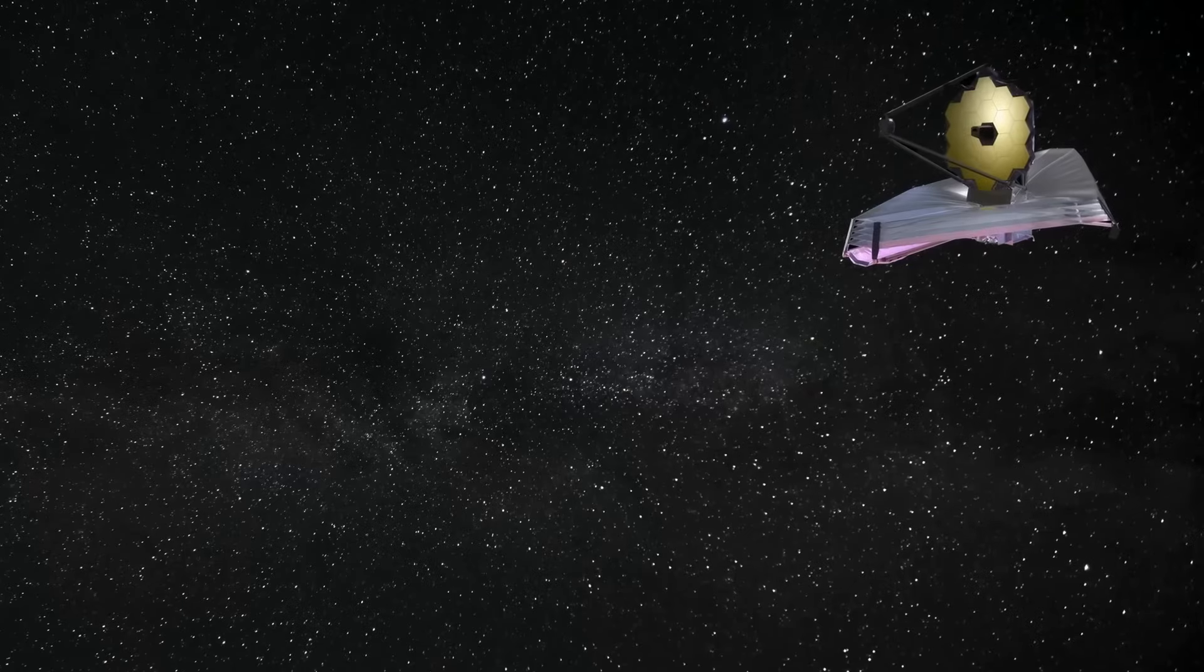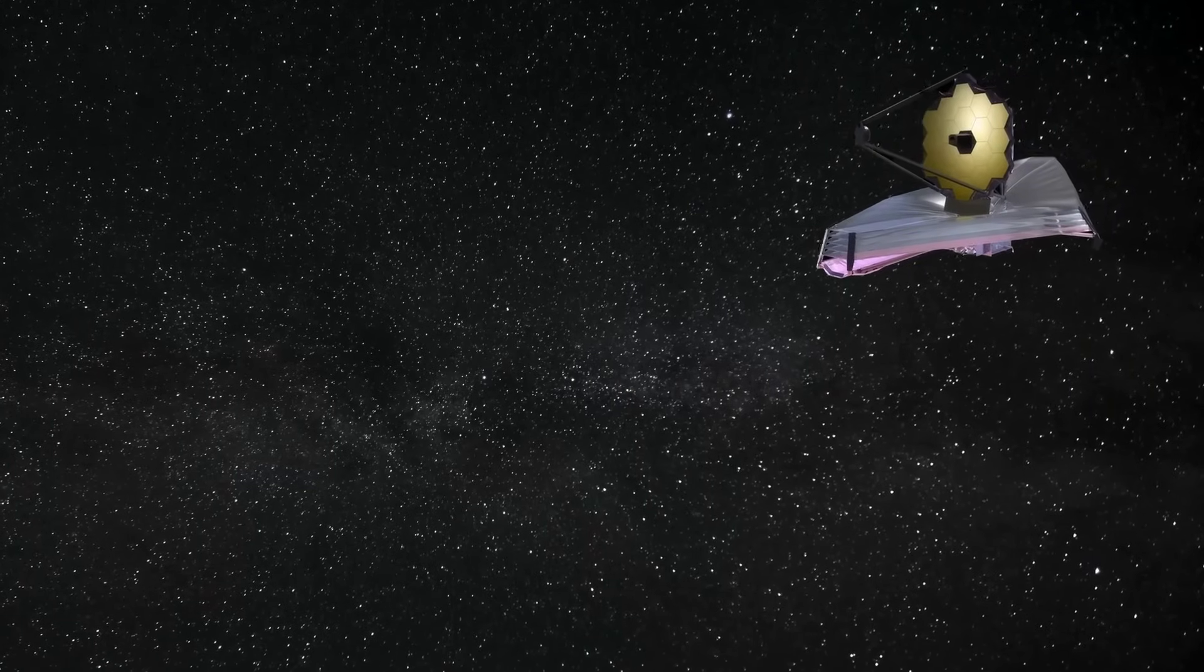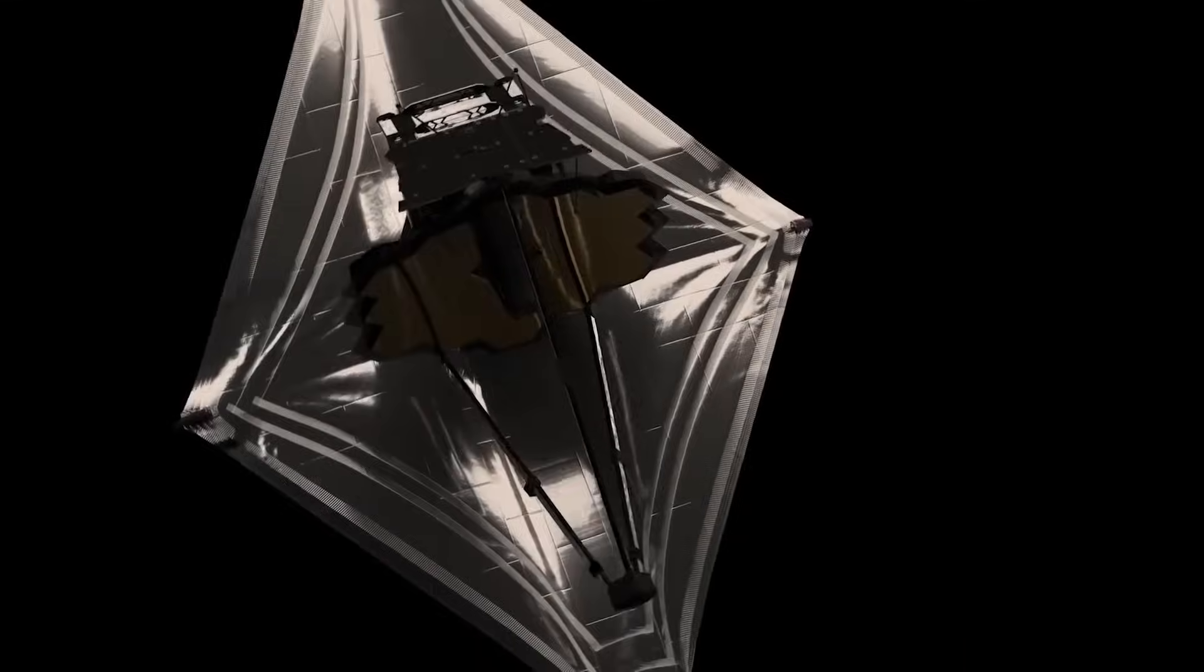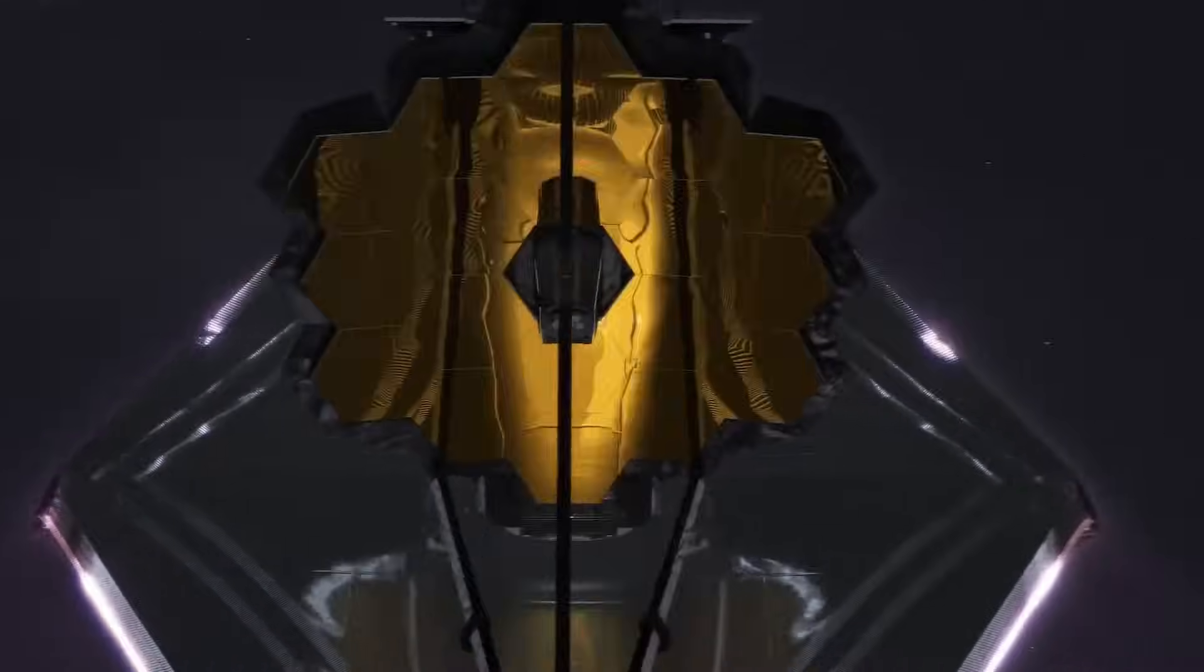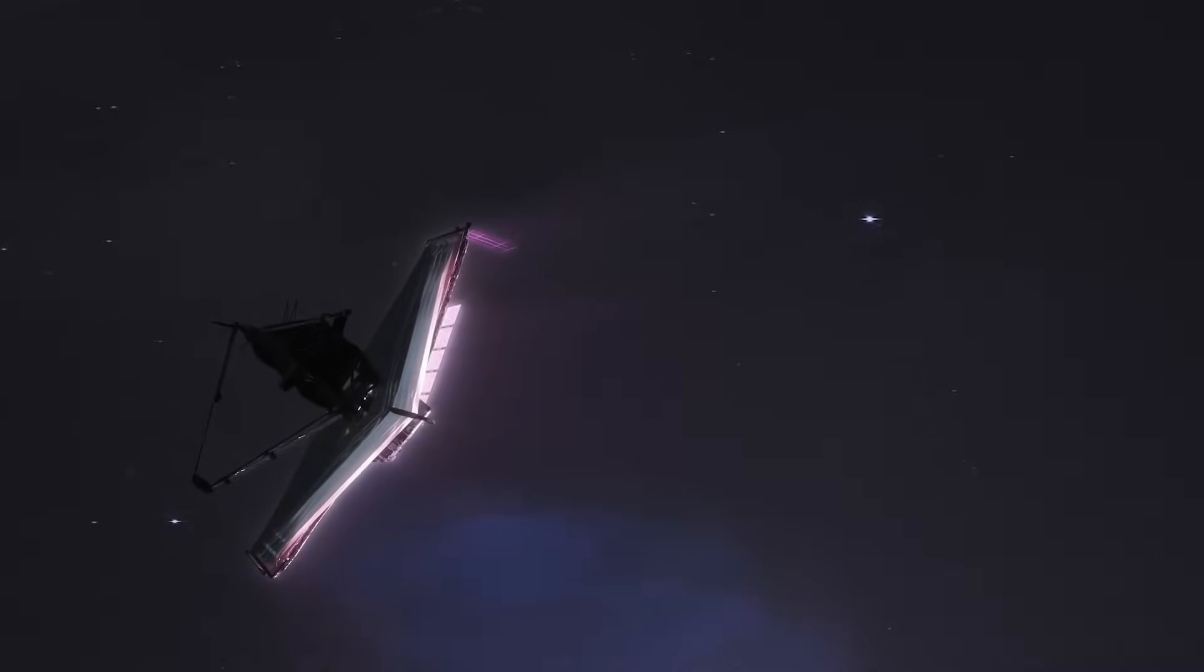This is how Webb was able to measure the shapes of distant galaxies in the early universe, using its powerful cameras and filters. But what did it find? And how did it surprise us? Let's find out in the next section.